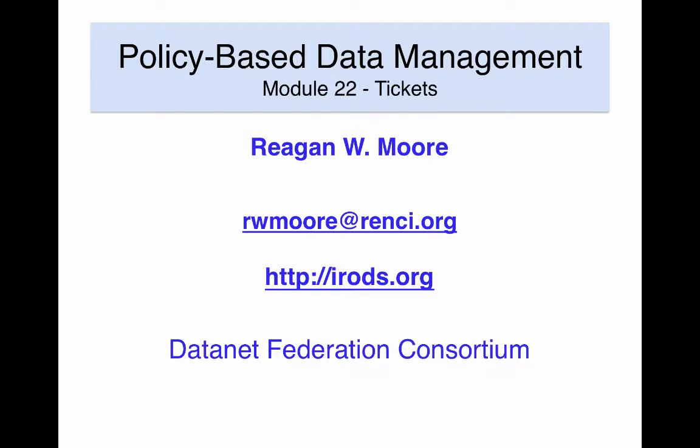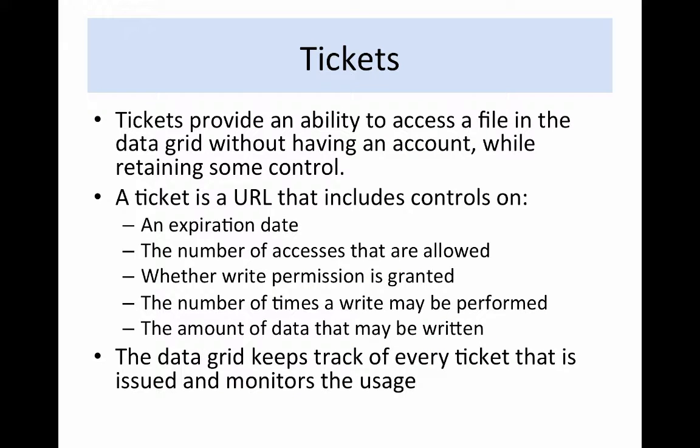Tickets provide a way to enable controlled access to files within the data grid for anonymous persons. The data grid is a highly controlled environment where every access is authenticated and every operation is authorized. If access is required by persons who do not have a data grid account, a method is needed to enable access while still controlling what they do. The concept of tickets was invented to address public access to managed collections, providing access to a file without an account while retaining some measure of control.